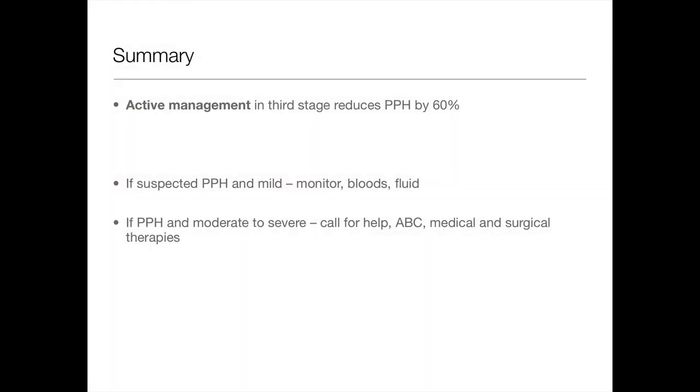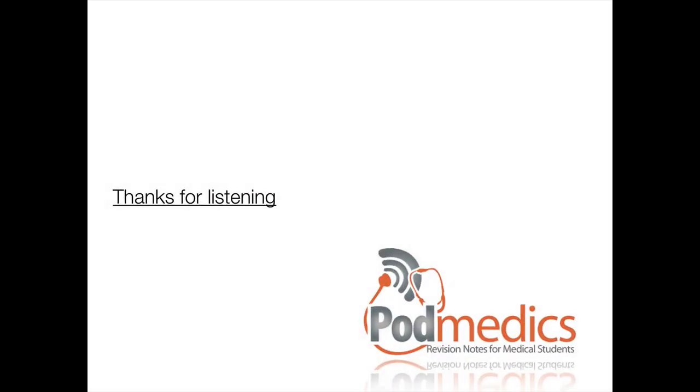So that's the basics of management. Can you just give us a quick summary? Because it's all sort of a lot going on. Okay. Remember postpartum hemorrhage is due to the four T's: tone, tissue, trauma, and thrombin. And the active management in the third stage of labor reduces PPH by 60 percent. That's massive. So active management is important. If you suspect PPH, then you should at first, if it's mild, monitor, you can take some bloods and fluids. If it's more severe, please call for help from all the people that I told you, and just start ABC management and think about medical and surgical therapies. Fantastic. Okay. So that's it for this podcast. Thank you, Kenga. We'll see you again very soon.